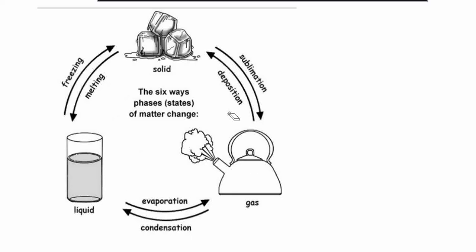From gas, when it turns directly into a solid state, we call this deposition. A common example is the mothball — the solid mothball can be turned into a gaseous state, and if we keep them in the cupboard, they will disappear over a certain period of time. Now, if we turn a solid state into a liquid state, we call this process melting. So there are six types of state of matter changes.